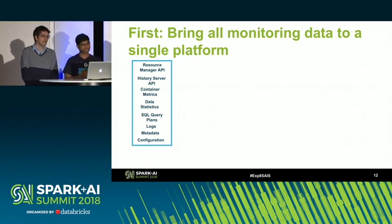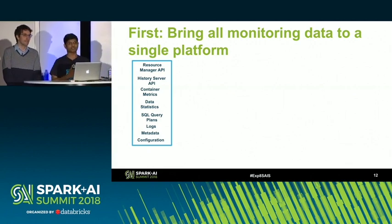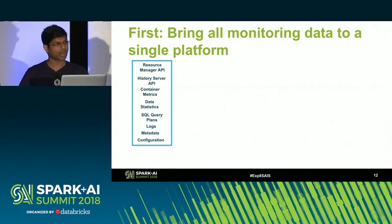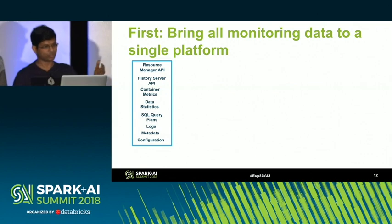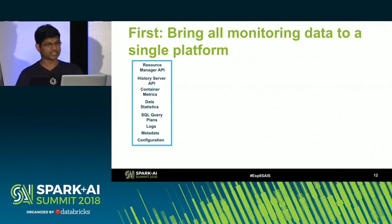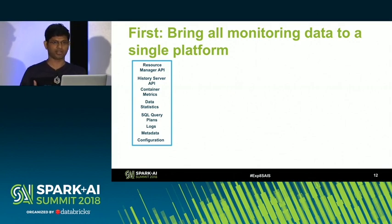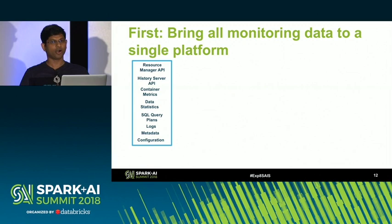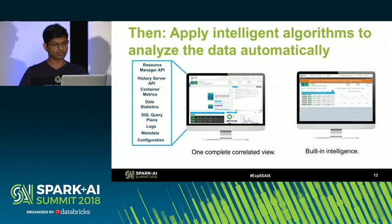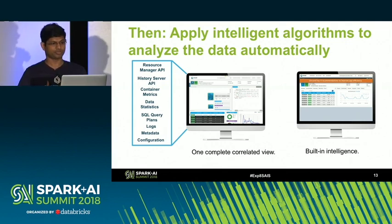There's resource management data — if you're using Yarn, the resource management API has lots of information about what's going on in the cluster: applications, scheduling, containers. There's also historical information from the history server API. You can go to every executor and driver container and collect fine-grained information at the JVM level, container level, or host level. There's metadata — data about tables, schemas, and statistics — execution plans for SQL, logs, configurations. Can we bring all of this data into one platform and apply algorithms to convert it into insights automatically?